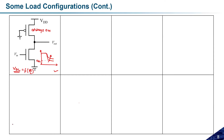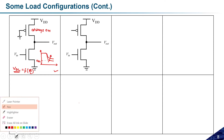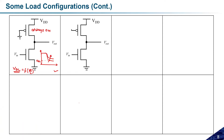Now let us go to the next circuit — the next possible combination. Suppose I have this kind of circuit where I connect the gate terminal of this pMOS transistor to VDD. Can anyone comment whether this circuit will act as an inverter or not?